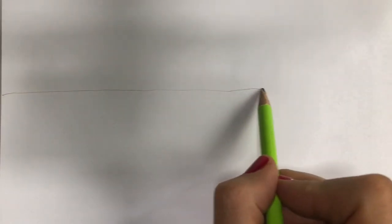This is a demonstration for the three solid shapes project. You're going to start by drawing a light line that's going to be the table that your solid shapes are sitting on top of.